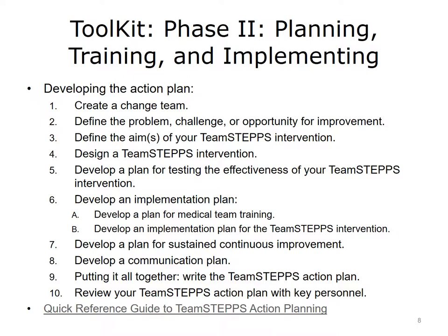Step four, design a TeamSTEPPS intervention. Step five, develop a plan for testing the effectiveness of your TeamSTEPPS intervention. Step six, develop an implementation plan: Part A, develop a plan for medical team training; Part B, develop an implementation plan for the TeamSTEPPS intervention. Step seven, develop a plan for sustained continuous improvement. Step eight, develop a communication plan. Step nine, putting it all together — write the TeamSTEPPS action plan. Each of these steps is detailed in the manual obtainable on the website. It is a robust resource, and we strongly recommend that you avail yourself of this material. A particular note is step six, part A — the website contains a great deal of training materials, including slides that can be used for teaching some aspects of teaming.